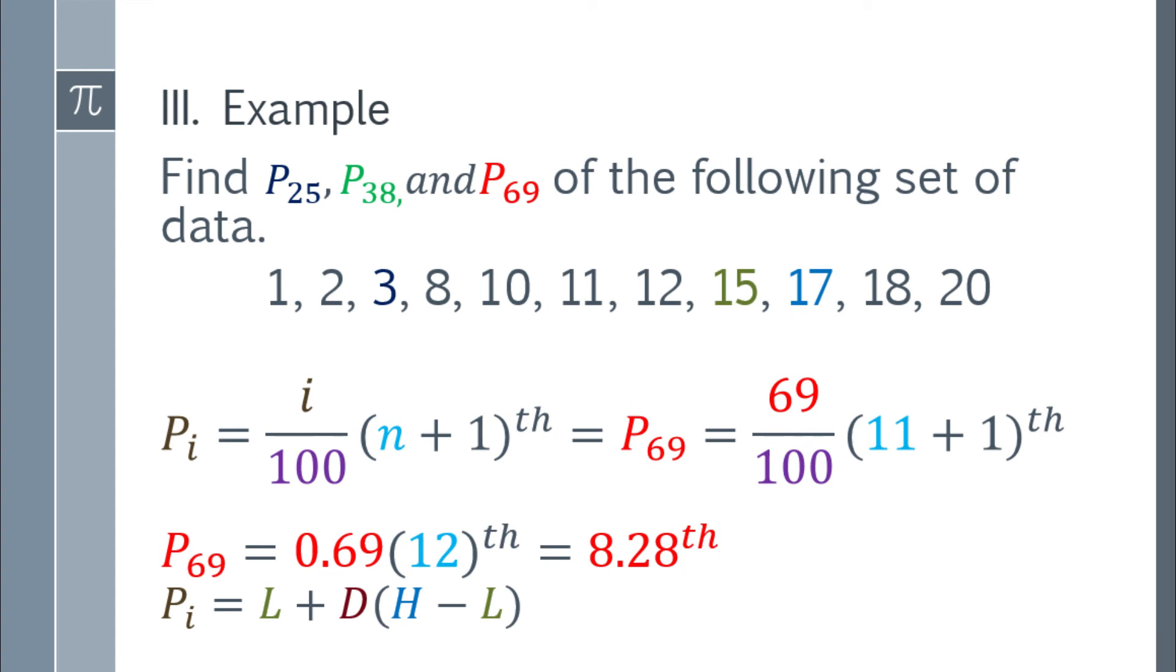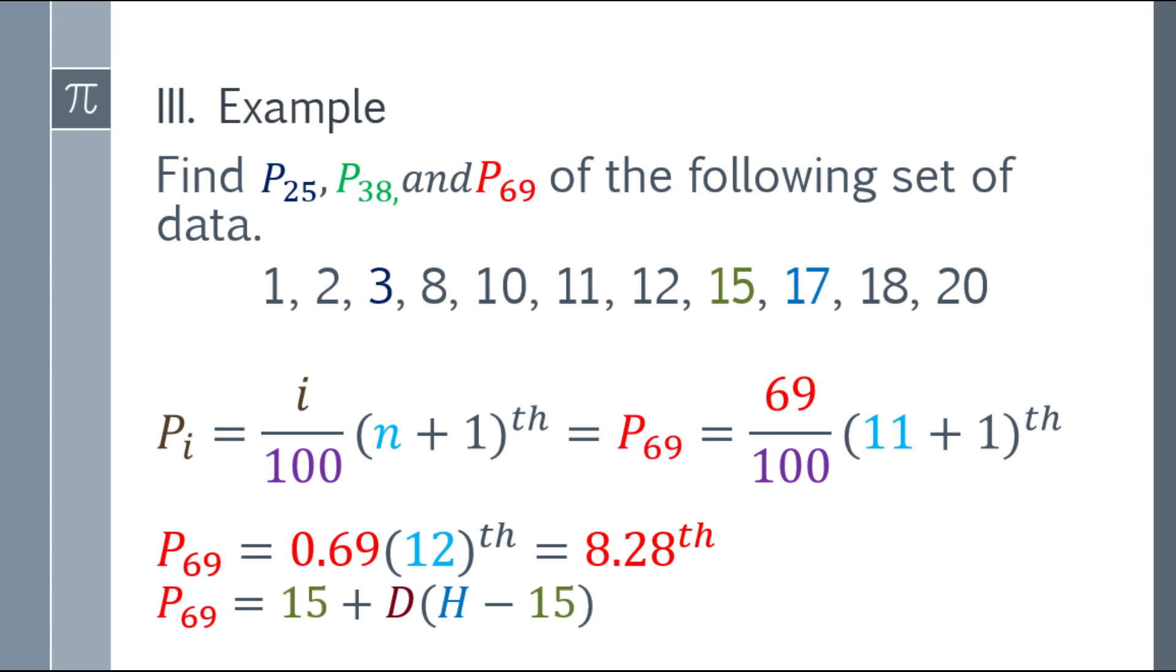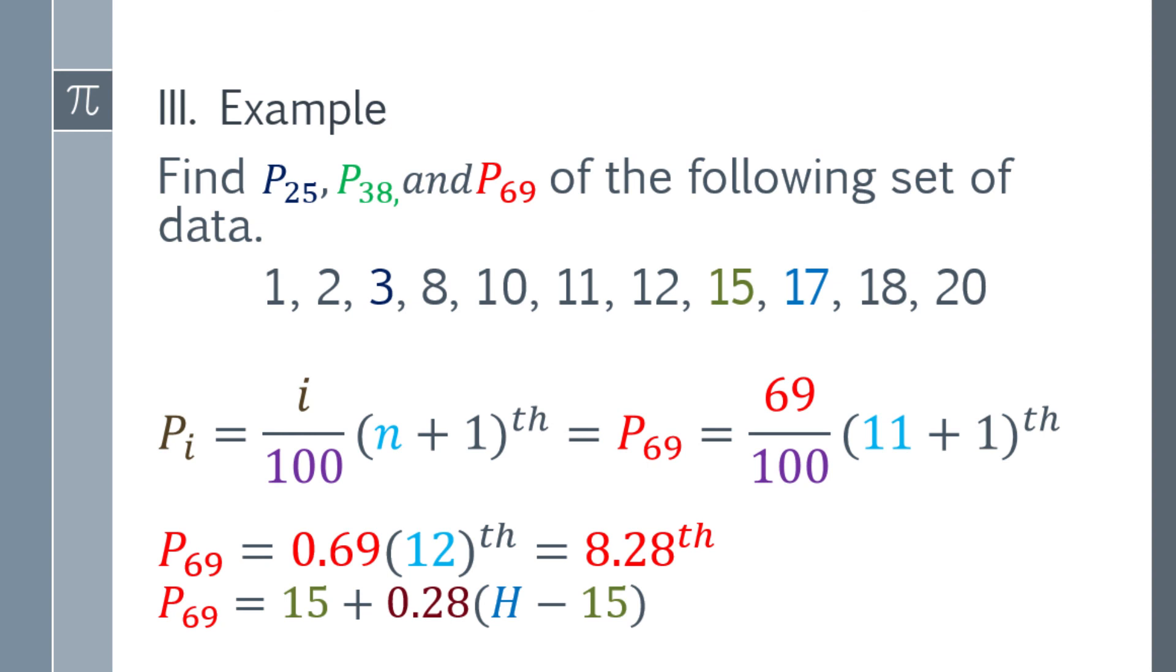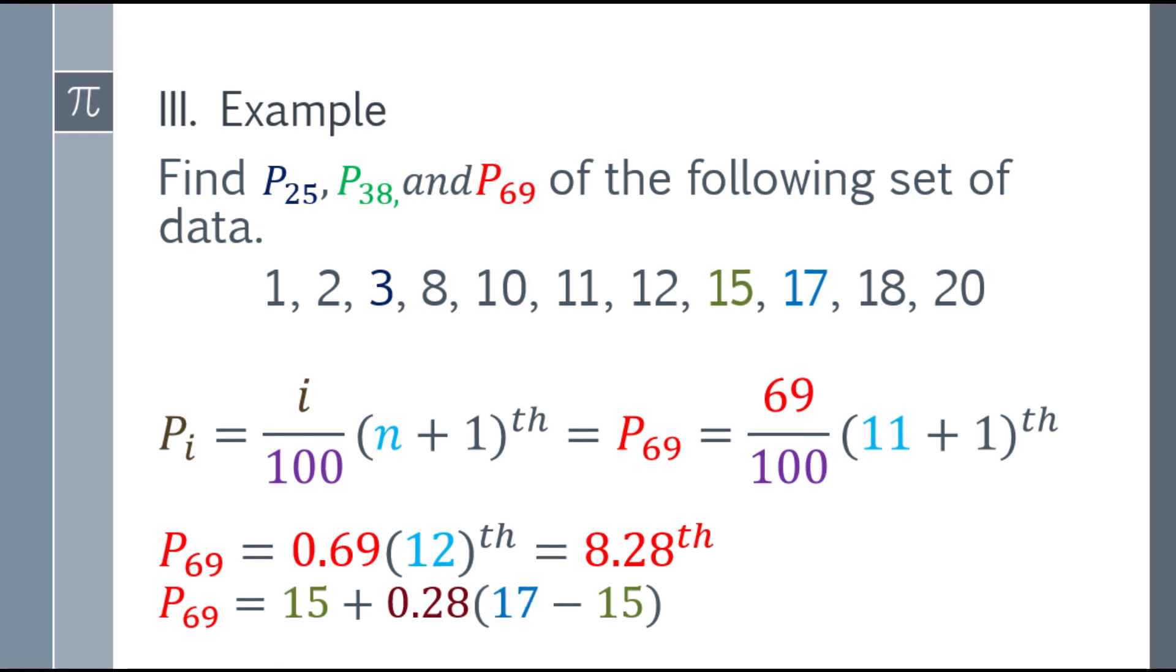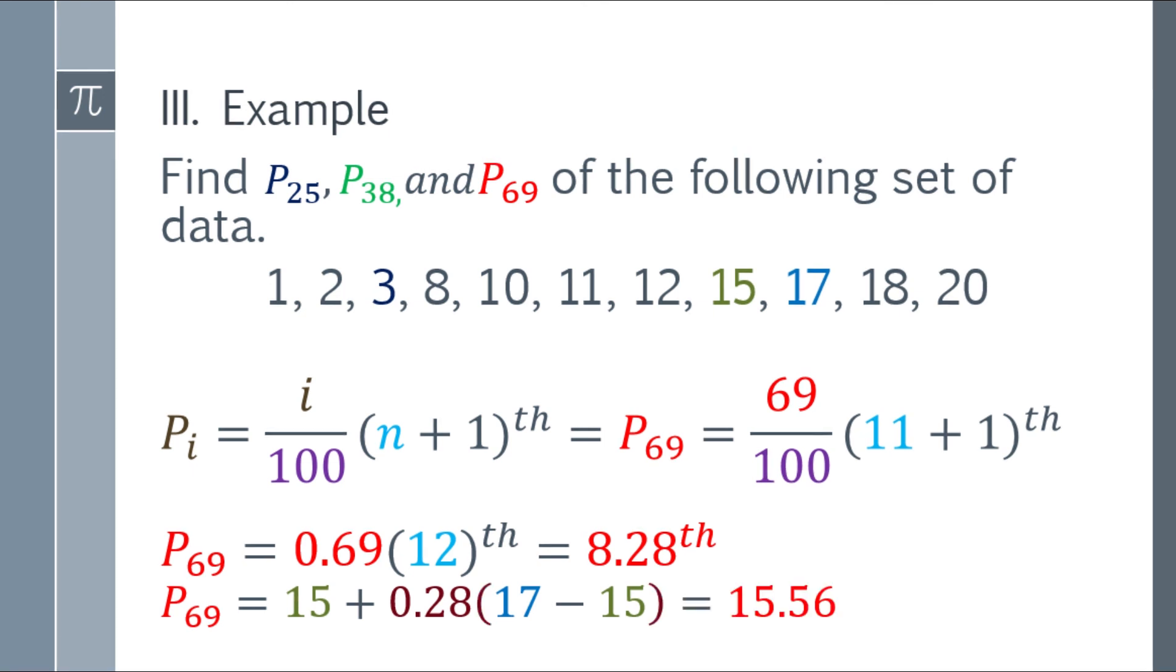Gagawin natin, nalagay natin yung formula for the interpolation. Nalagay ko na siya. And we need to substitute it. Yung lower number. And i-round mo ang 8.28, that will be 8. At i-round off mo siya, that will be 9. Hanapin mo yung 8, yung pang-wulo, at ang pang-sham dun sa data. That will be 15 and 17. Ilagay mo na siya dun sa formula natin. That will be 15 plus 0.28. Kasi 0.28 ay decimal. At yung h naman, that will be 17. 17 minus 15, that will be 2. Multiply mo sa 0.28. At mag-add ka na 15. And the final answer will be 15.56.